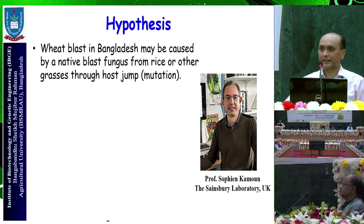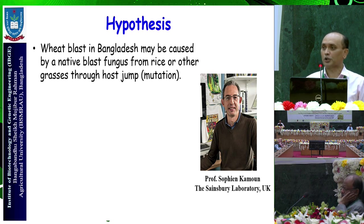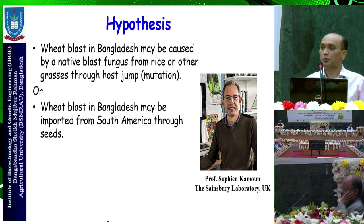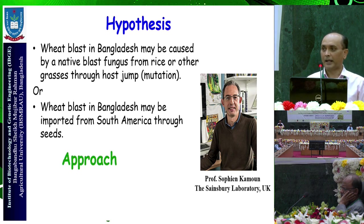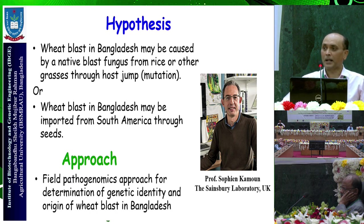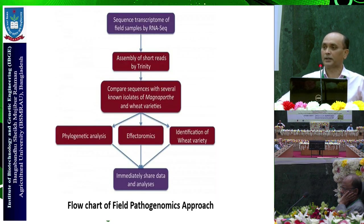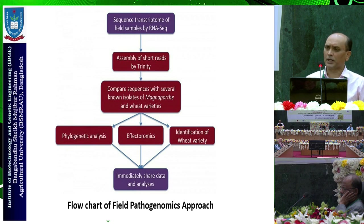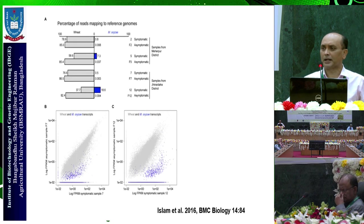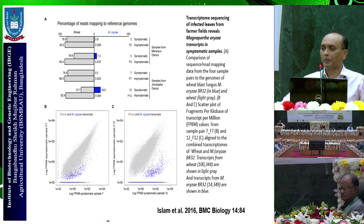When this disease first appeared in Bangladesh, we hypothesized it may be caused by a native blast fungus through mutation or host jump, or that it somehow moved from South America. We collaborated with scientist Sophien Kamoun to apply genomic technology — field pathogenomics — using next generation sequencing to sequence a large population of samples from all affected fields. When we got the data, it was a big problem to make a conclusion because the National Center for Biotechnology Information (NCBI) had only limited wheat blast sequences, so we could not make a precise conclusion.